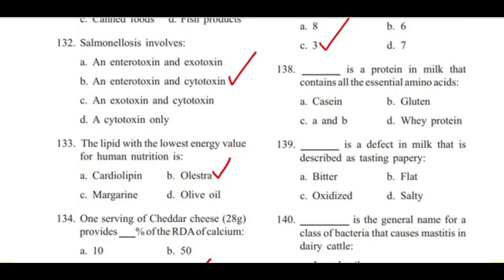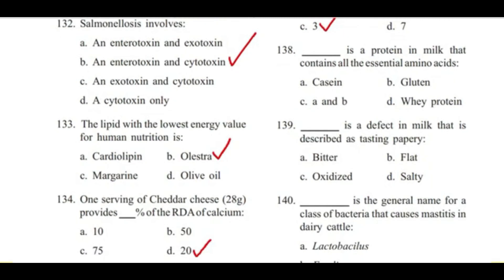Question 138: Which is a protein in milk that contains all the essential amino acids? — Casein, gluten, both A and B, or whey protein? Answer is D, whey protein. Whey protein is used to build muscles.